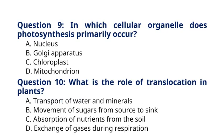Question 9. In which cellular organelles does photosynthesis primarily occur? A. Nucleus. B. Golgi apparatus. C. Chloroplast. D. Mitochondria. The correct answer to question 9 is option C. Chloroplast.